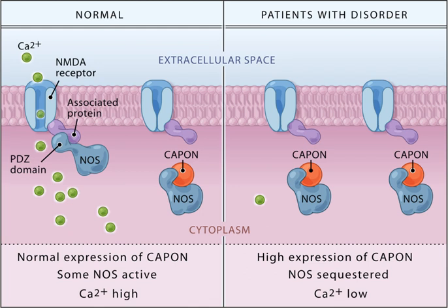Additional trace amines include phenethylamine, tyramine, 3-iodothyronamine, octopamine, tryptamine, and others. Peptides include oxytocin, somatostatin, substance P, cocaine and amphetamine regulated transcript, and opioid peptides.